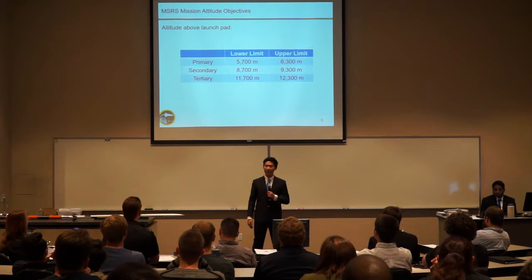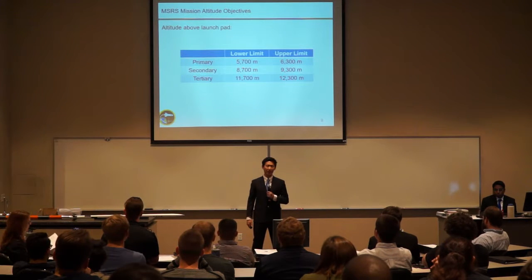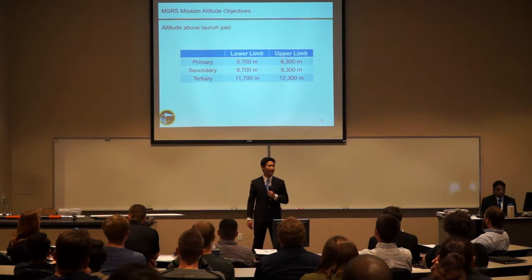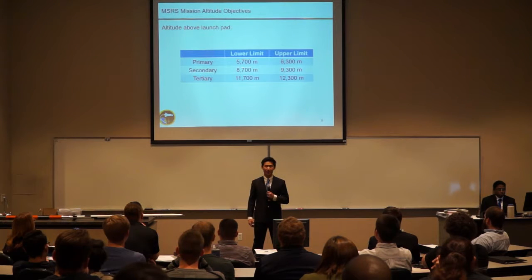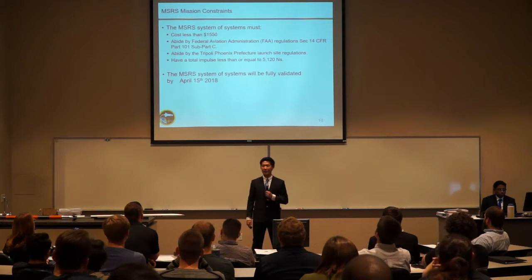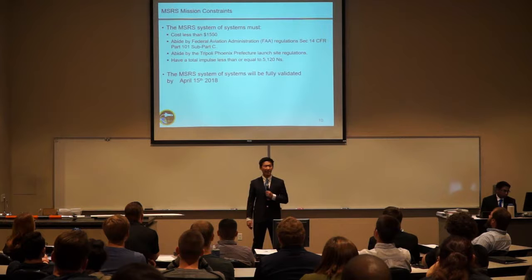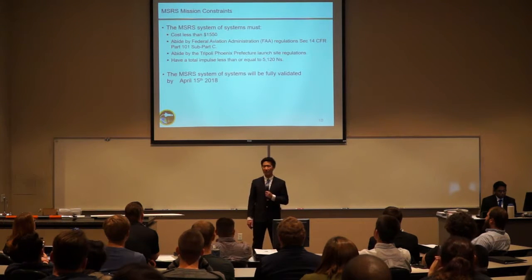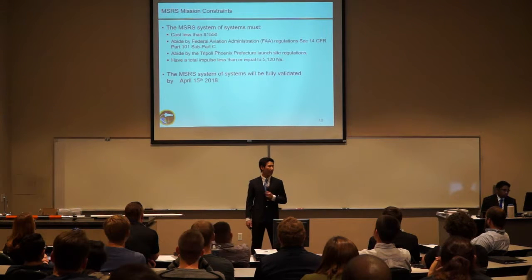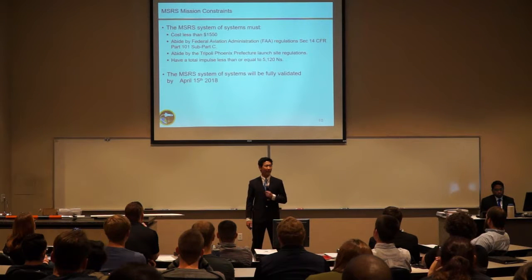Our altitude objectives are tiered in primary, secondary, and tertiary objectives. We'll be focusing on the tertiary objectives. All design work was conducted for a lower limit of 11,700 meters to an upper limit of 12,300 meters. Our mission constraints have four main categories: financial, given by the College of Engineering, with the entire system costing less than $1,550; FAA regulations surrounding amateur rocketry; launch site regulations; and a total installed impulse of 5,120 Newton-seconds. Our plan was to have the system validated by April 15, 2018, but unfortunately that didn't happen.